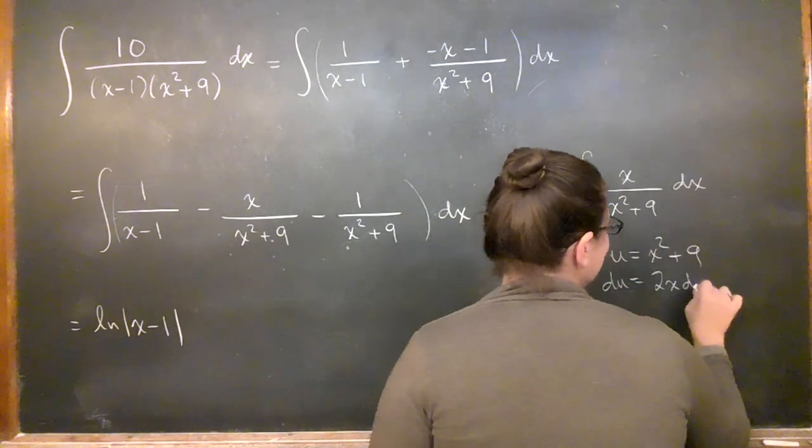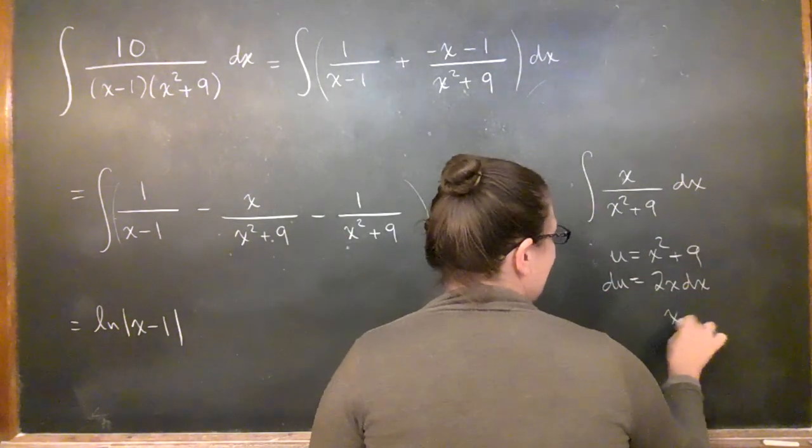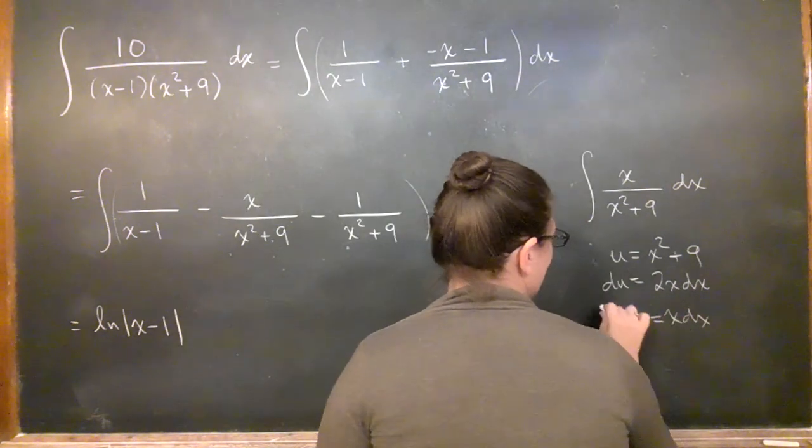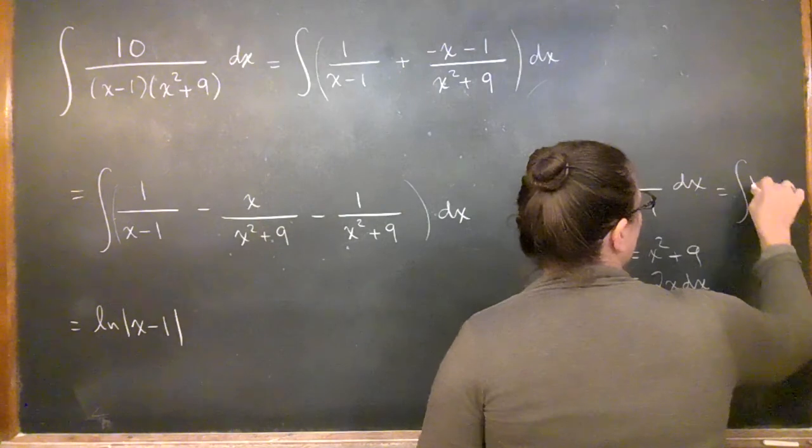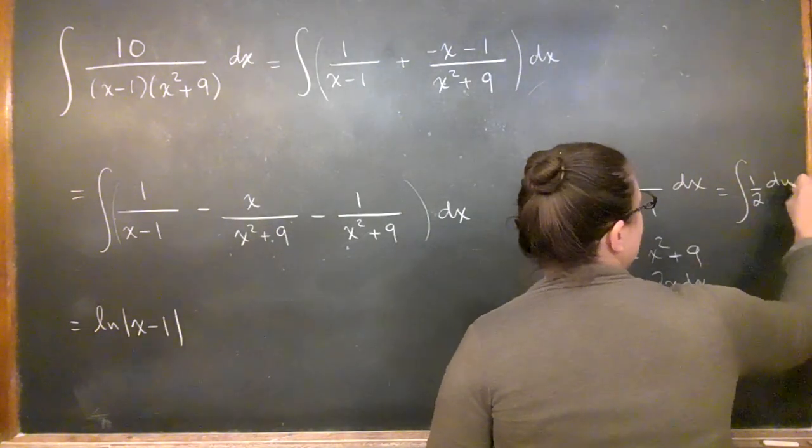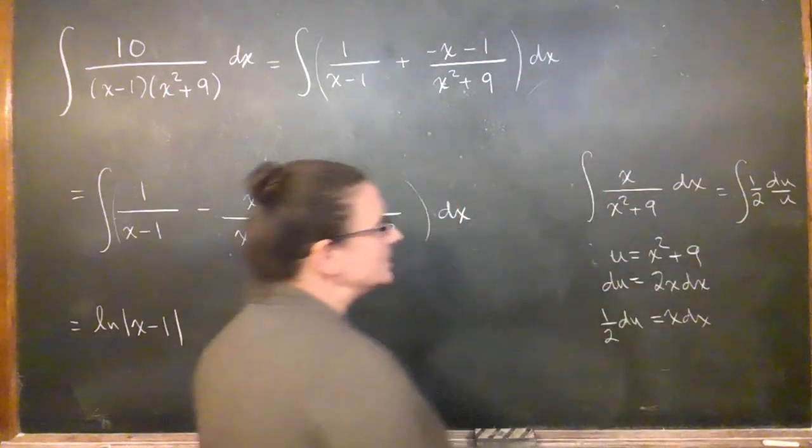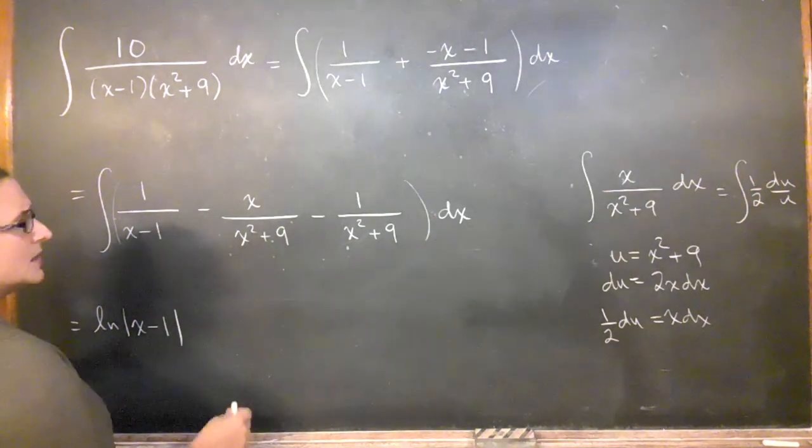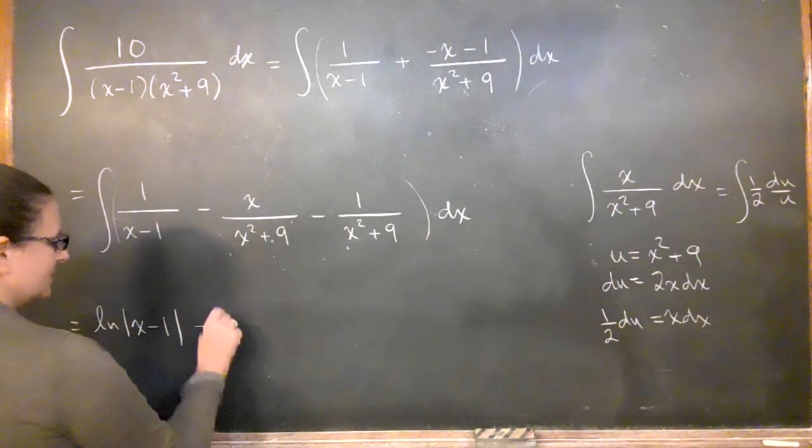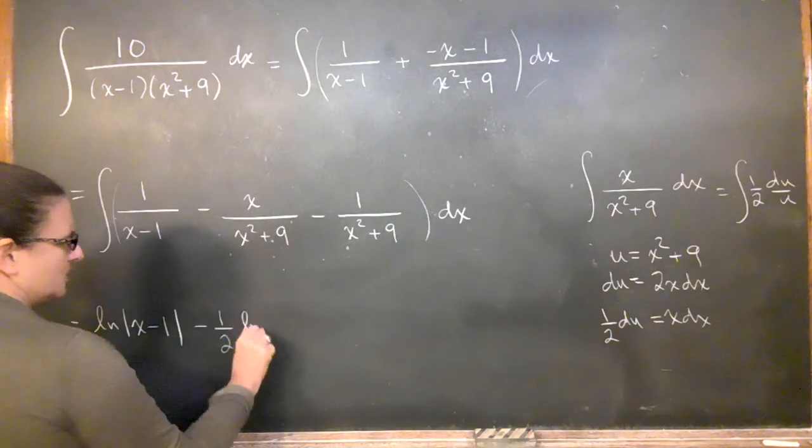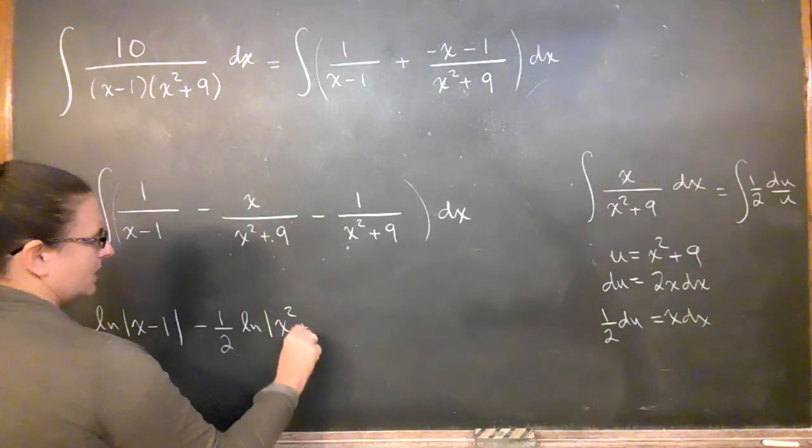Du equals 2x dx, right? So x dx is in the top. It's 1 half du. So this is just going to be 1 half du over u. So that's also a natural log because I have this x in the top, right? So then this is going to be 1 half natural log of x squared plus 9.